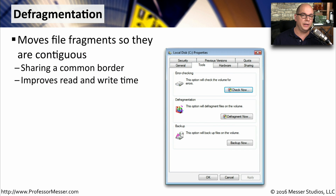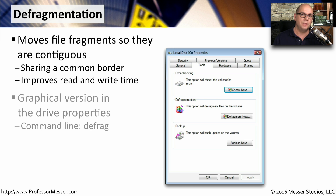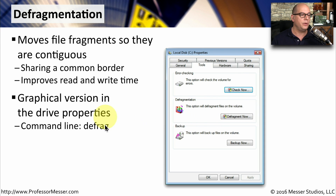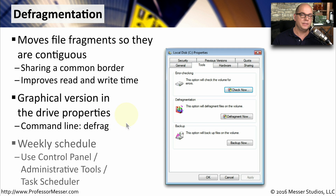A defragmentation tool is also built into Windows, which is especially helpful if you're running a spinning hard drive where different parts of a file may be located in different areas of the drive. Defragmentation takes all those pieces and puts them into a single contiguous area, improving read and write times and overall OS performance. You can find it in the drive properties graphically, type 'defrag' at the command line, or schedule it via Task Scheduler under Administrative Tools in the Control Panel.